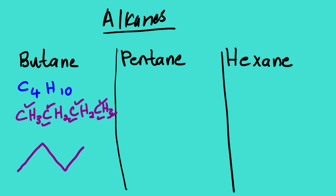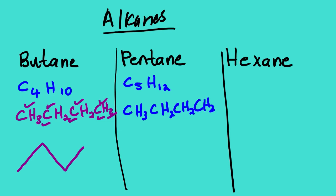Looking at pentane: we have C5. Using CnH(2n+2): 2×5=10, plus 2 is 12, so it's C5H12. Looking at the condensed formula, following the trend: CH3CH2CH2CH2CH3. The line-angle structure for pentane has five carbons: 1, 2, 3, 4, 5.